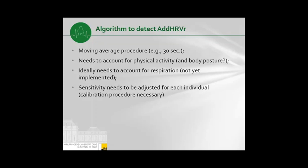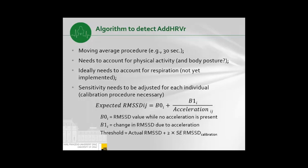Such an algorithm is not easy to implement, but it is available from MovieSense and can be developed further. The rationale is a moving average procedure across 30 seconds, continuously analyzing HRV, continuously analyzing the amount of physical activity, and ideally also controlling for body posture, respiration, and other covariates. These represent opportunities for further developing such algorithms. The sensitivity of the algorithm needs to be adjusted for each individual, because the relationship between bodily movement and HRV differs per person and each individual may have different HRV fluctuation levels.